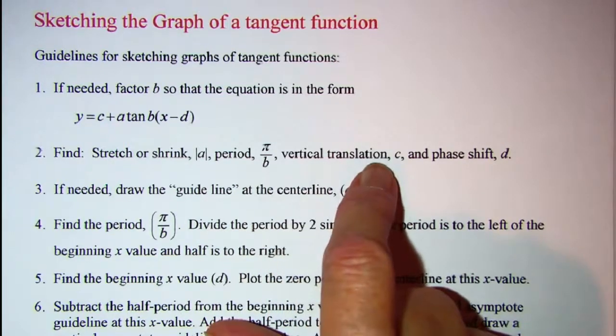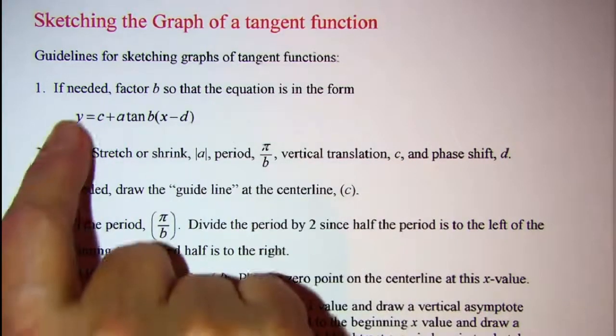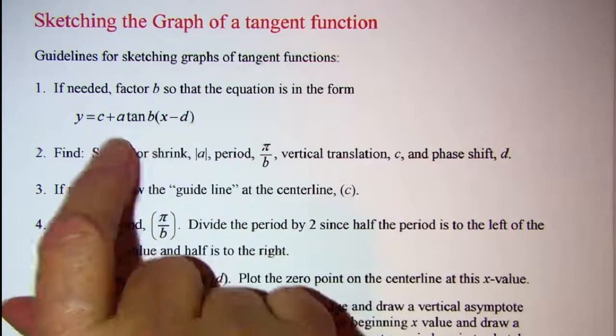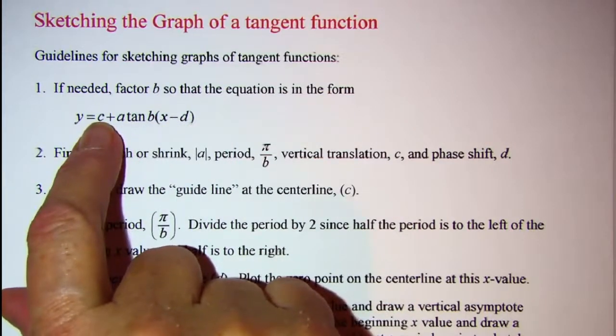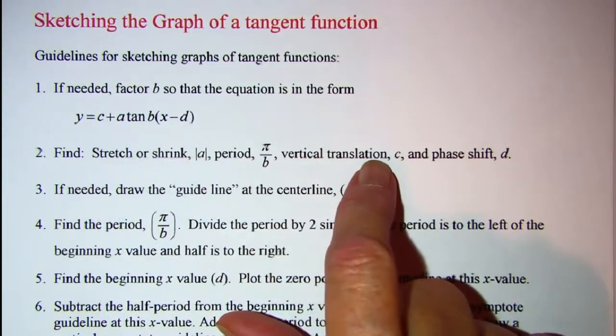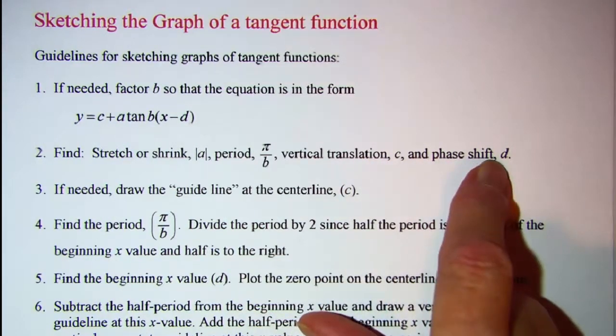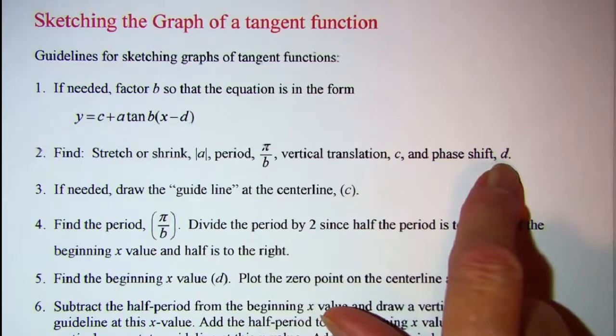Vertical translation is the C value, so sometimes this number is in the back sometimes it's in the front, but that represents how much we move our basic points up and down. And then the phase shift is the value of D, so that's the right and left movement.